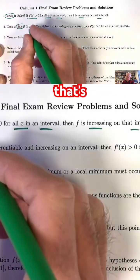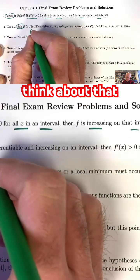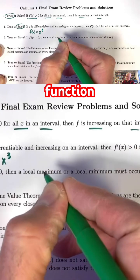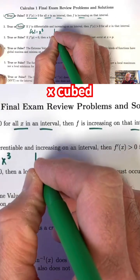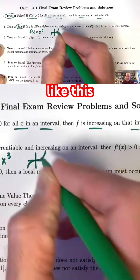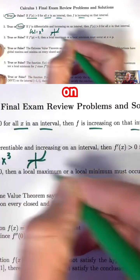One example that's sort of the simplest example to think about that disproves this is the x cubed function. f(x) equals x³. Its graph looks like this. It's always increasing on any interval.